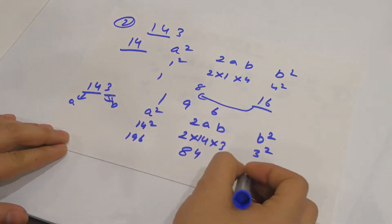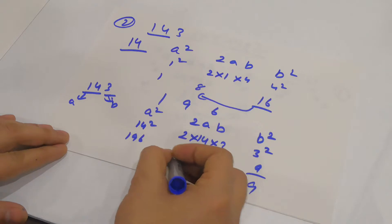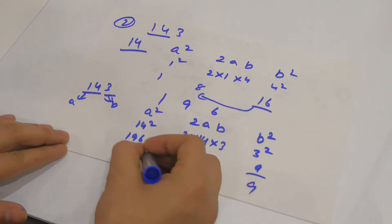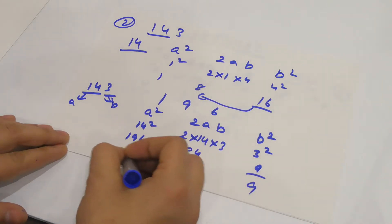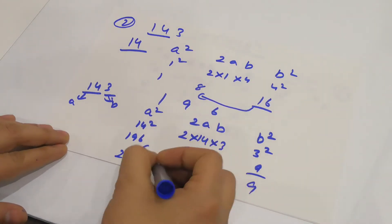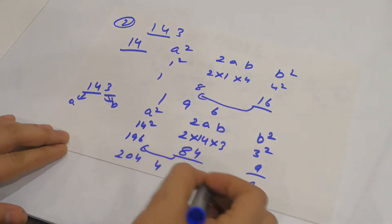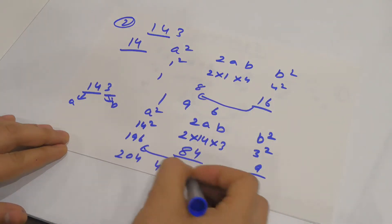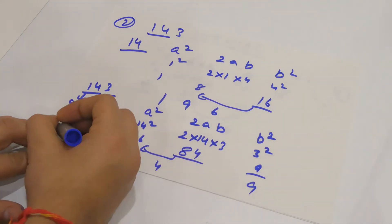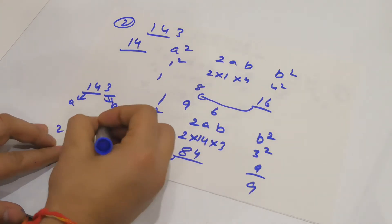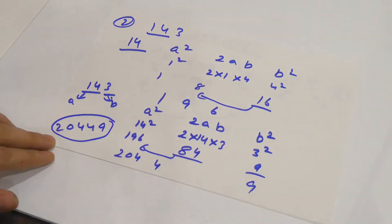Since 9 is a single digit I'll keep it as is. From 84, I carry 8 to the next column, so 196 + 8 = 204, with 4 remaining. So the final answer is 20449 — the square of 143 is 20449.